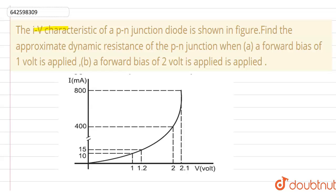In this question, the IV characteristics of a PN junction diode is shown in the figure. We have to find the approximate dynamic resistance of the PN junction when a forward bias of 1 volt is applied and a forward bias of 2 volt is applied.